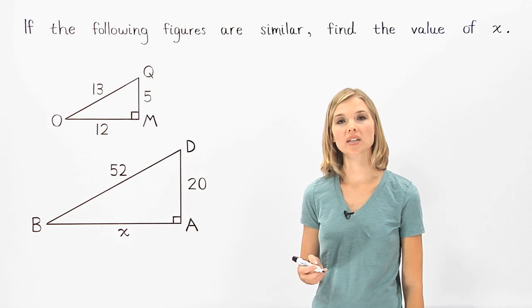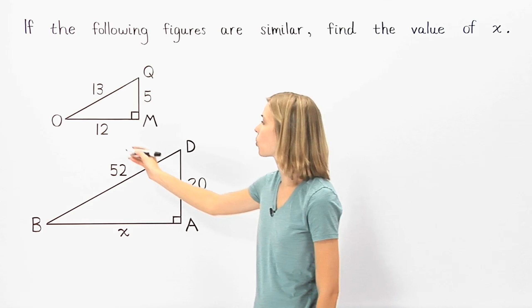Notice that the corresponding sides for the triangles shown have lengths 5 and 20, 12 and x, and 13 and 52.